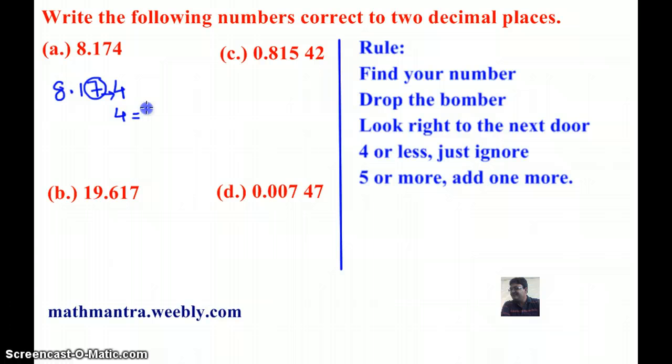Here, the next door number equals 4. So, I am just going to ignore and write the number as it is. So, 8.17 is going to be my answer.